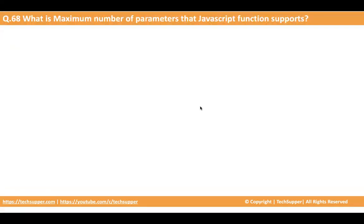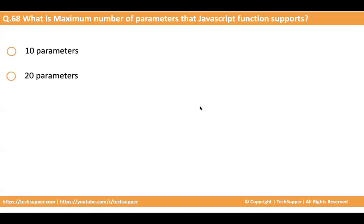The next question is: what is the maximum number of parameters that a JavaScript function supports in Oracle Integration? When you write a JavaScript function, you can provide input parameters — but how many parameters can you pass to the JavaScript function from Oracle Integration? The options are 10, 20, 30, and 40. The answer is 20 parameters. You cannot pass more than 20 parameters when calling a JavaScript function in Oracle Integration.